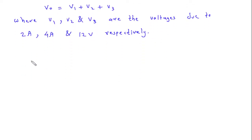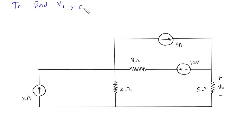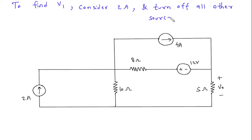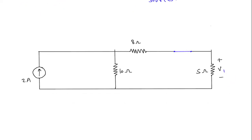To find V1, we will consider the 2 Ampere current source and turn off all other sources. The 4 Ampere current source will be turned off and open circuited. The 12 Volt voltage source will be turned off and short circuited. This will be V1 because we are finding V1.